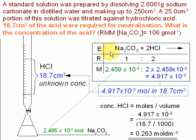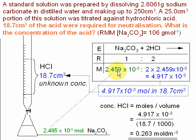E for equation: sodium carbonate reacts with two hydrochloric acids — it's in a 1:2 ratio — because the carbonate ion is CO₃²⁻, so it requires two H⁺ ions to react with. E for equation, R for ratio, M for moles or amount. We know the amount of sodium carbonate, 2.459×10⁻³. Using the 1:2 ratio, the amount of hydrochloric acid is going to be two times that.